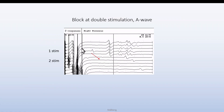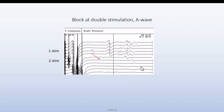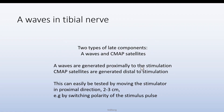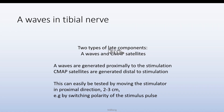Here is an example with single stimulation showing late components, and double stimulation showing no late components at all. In the tibial nerve, where we particularly often have these late components, we have both A waves and particularly CMAP satellites.